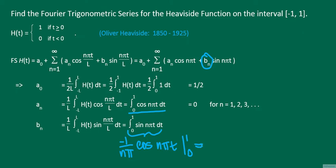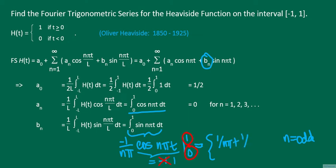To evaluate this, we break it into two cases. First, the case when n is odd. At t equals 1, cosine(nπt) is cosine(nπ), and when n is odd, cosine(nπ) equals cosine(π) which is minus 1, giving us 1 over nπ. At t equals 0, cosine(0) equals 1, giving minus 1 over nπ, which we subtract, so we get plus 1 over nπ. Therefore B sub n equals 2 over nπ when n is odd.